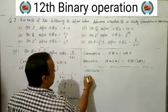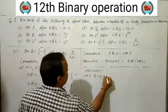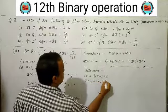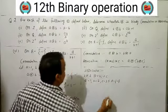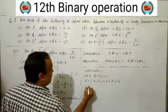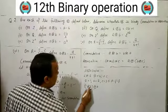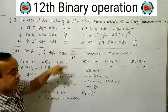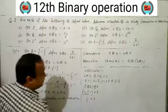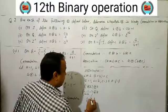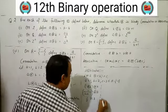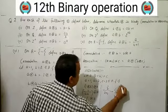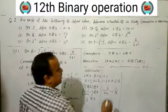Checking associative for a★b = a/(b+1). Left hand side: (A★B)★C with a=1, b=2, c=3. First: 1★2 = 1/(2+1) = 1/3. Then (1/3)★3 = (1/3)/(3+1) = (1/3)/4 = 1/12.